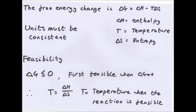Feasibility of a reaction. When delta G equals zero, or is less than zero, so negative, the reaction is feasible. So a reaction is first feasible when delta G equals zero. This means you can rearrange the equation.